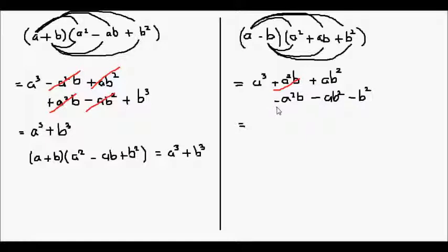Positive a squared b and negative a squared b cancel out. Positive ab squared and negative ab squared cancel out. And sorry, this should be a cubed, not a squared b squared. And we're left with a cubed minus b cubed.